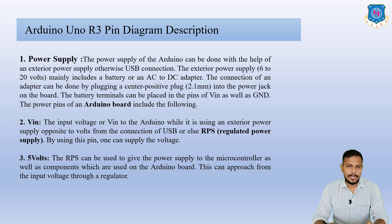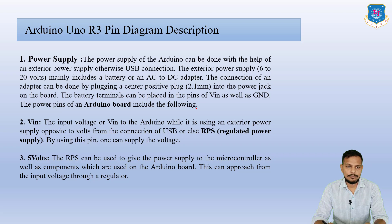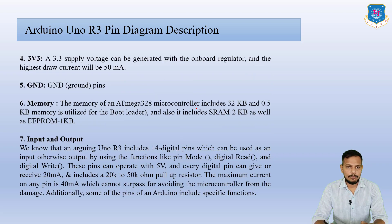The 5V pin is used to give power supply to the ATmega328 microcontroller and to components used on the Arduino board. This can come from the input voltage through a regulator. The 3.3V pin provides a 3.3 volt power supply which can be generated with the onboard regulator.